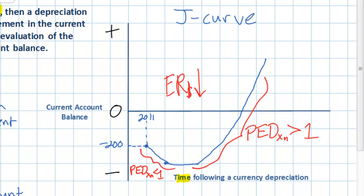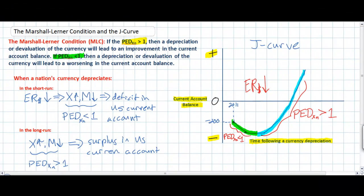It's called a J for an obvious reason — it is shaped like a J. The vertical axis is the nation's current account balance, with a positive range above zero and a negative range below zero. The horizontal axis is simply the time following a currency depreciation. In the short run, a weaker currency moves a country's current account towards deficit, since consumers are not very responsive to the now cheaper goods from that country. But in the long run, a weaker currency should begin to move the current account towards surplus. That concludes the lesson on the Marshall-Lerner condition and the J-curve, which is part of the higher level section of the IB Economics International Trade unit.